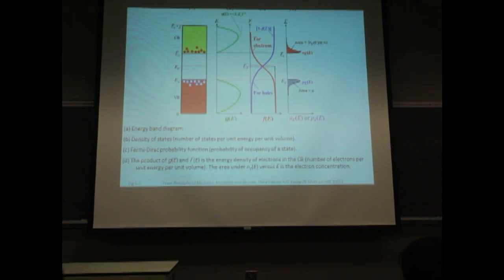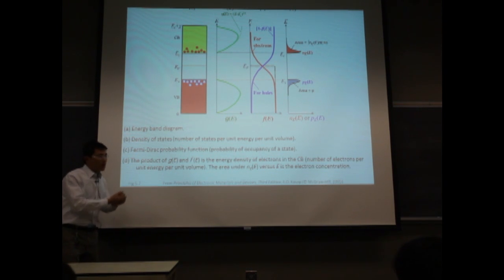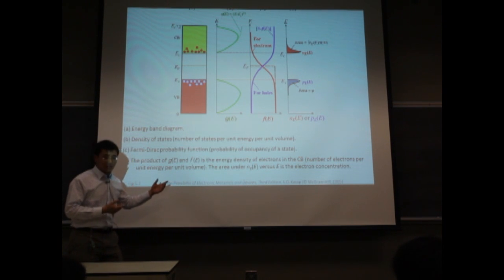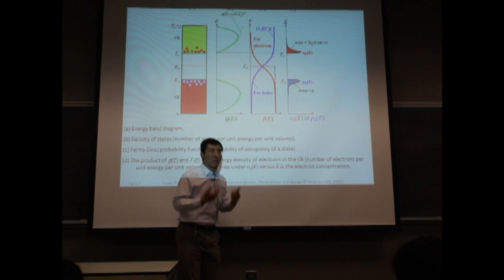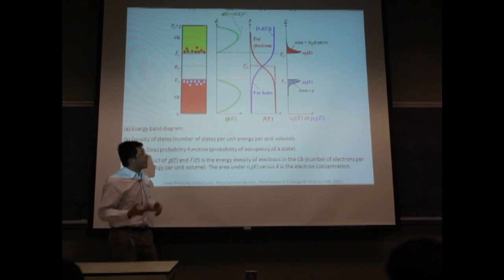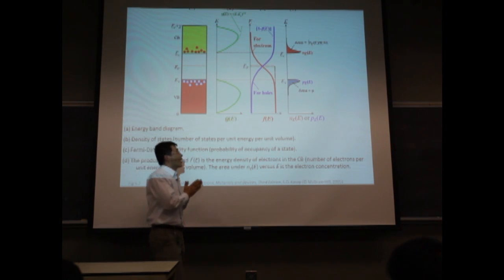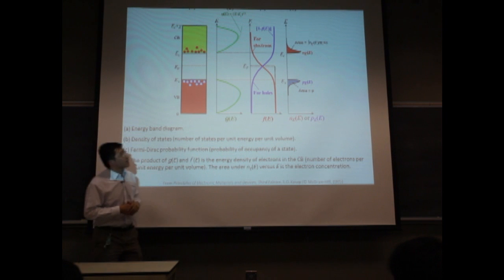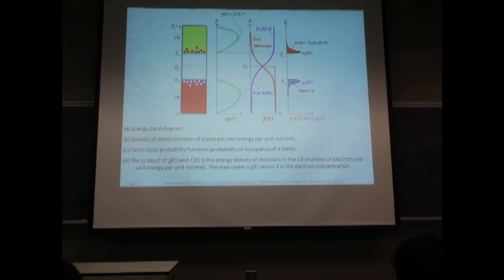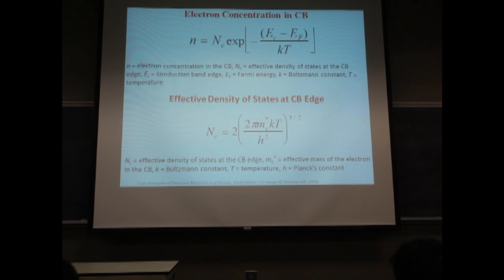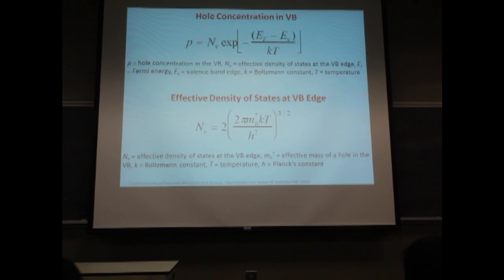How do we calculate the carrier density? First, you need to know where the Fermi level is, then the density of states for the semiconductor, and the distribution of carriers given by the Fermi-Dirac function. Combining these two, we get the carrier density distribution. The electron carrier density in an n-type semiconductor is given by the density of states for electrons times the distribution. Similarly, hole density is given by the density of states for holes times the distribution, representing free holes in a p-type semiconductor.